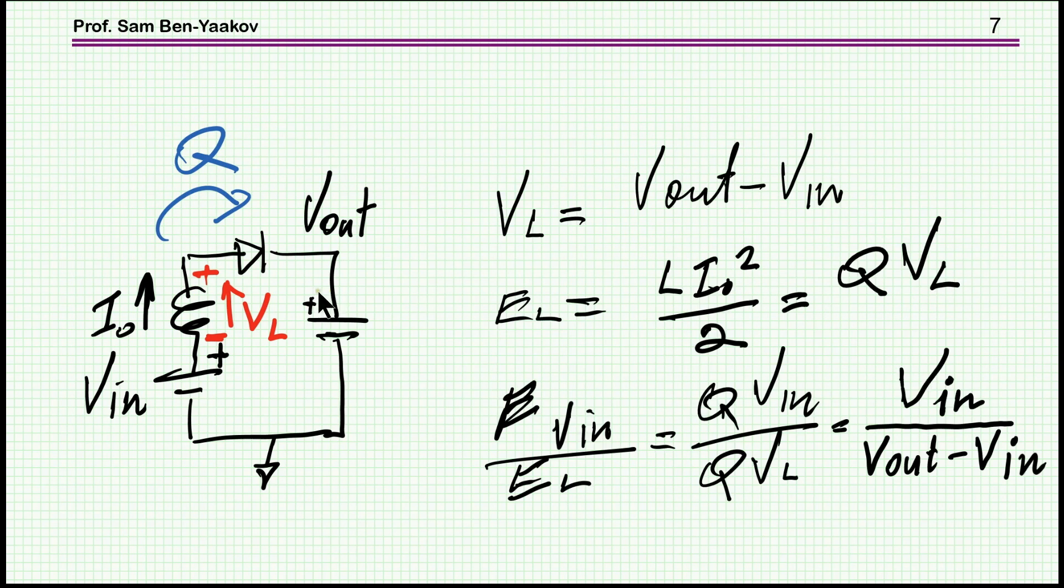Or if you want it a little bit more arranged here, voltage of the inductor is V_out minus V_in. Energy, indeed, it is LI^2 over 2. But in this particular situation, since the voltage of the inductor is clamped and there is a charge passing through it, there is no escape from the conclusion that the energy is Q times V_in during the time of the discharge. So therefore, we come up with this equation.